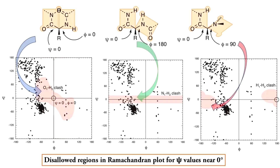So, let us now set psi to 0 and vary phi. Observe that when phi is near 0, we have some steric clash between the amino group hydrogen and the carbonyl group oxygen. Simply speaking, conformations characterized by both phi and psi being 0 are not permitted. If phi is near 180, we again have some steric clash between the amino group hydrogens of the two successive amino acids. However, since hydrogen atoms are very small, these clashes are not that serious.